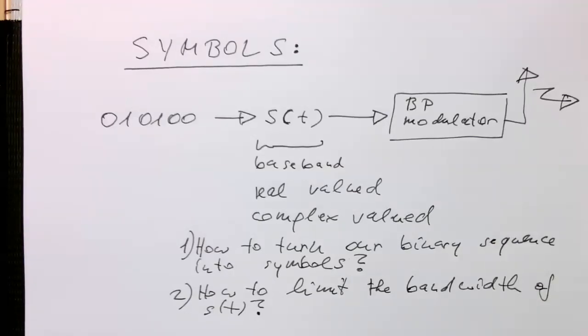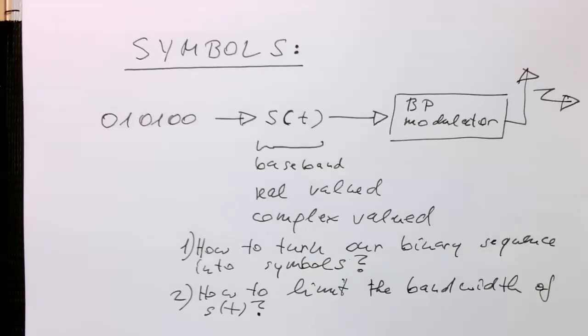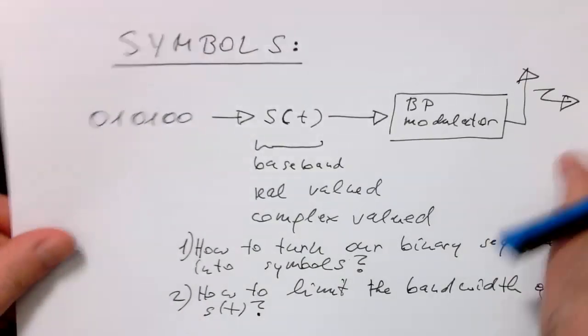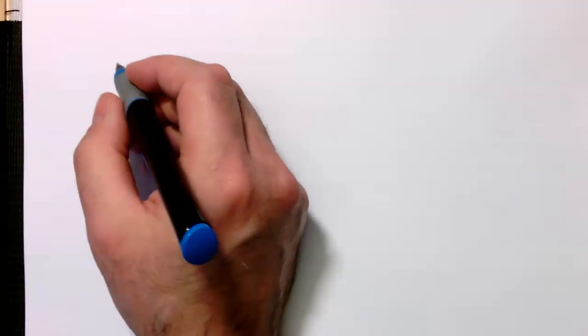So we need to discuss these two aspects here. Let's start with how to turn our binary sequence into symbols, and that's going to continue for a while also with OFDM, but let's start with so-called constellations.